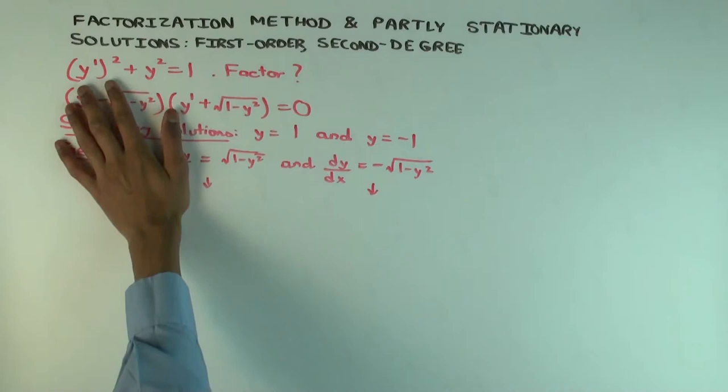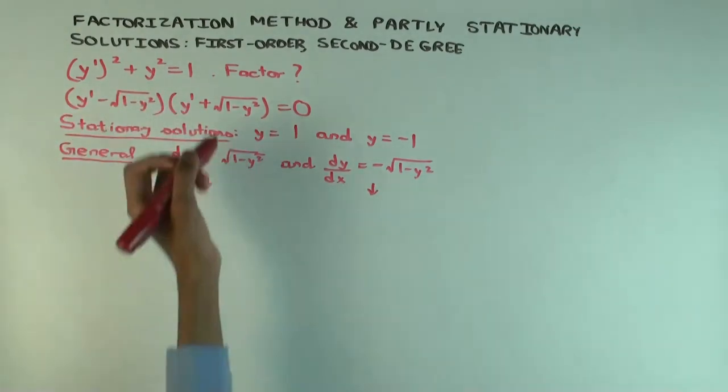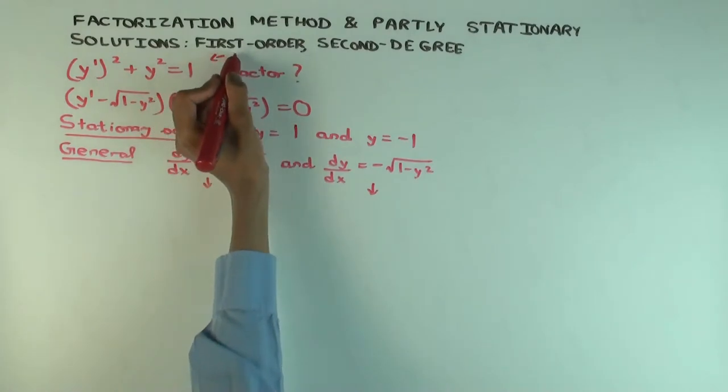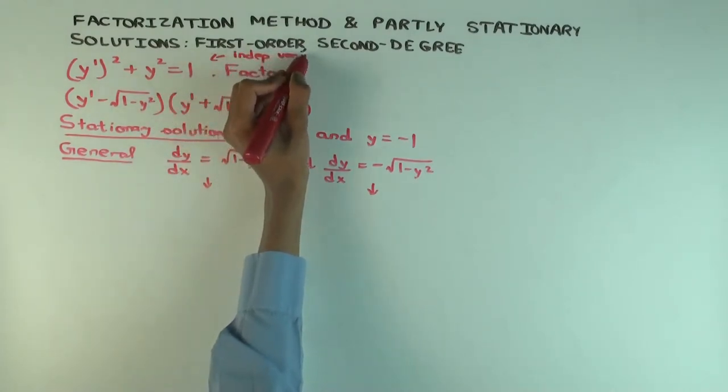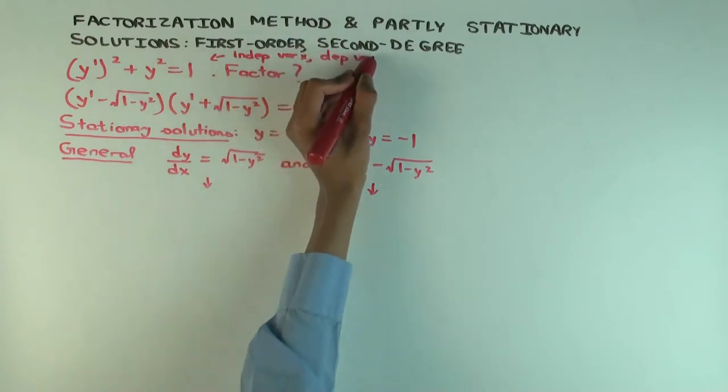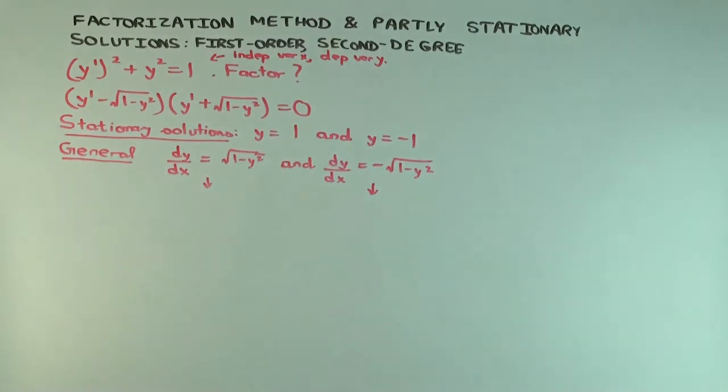Here's the differential equation. X is the independent variable, Y is the dependent variable. The equation is Y prime squared plus Y squared equals 1. What's the interesting solution to this?